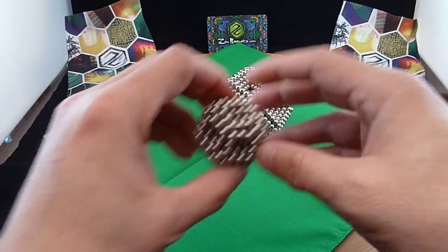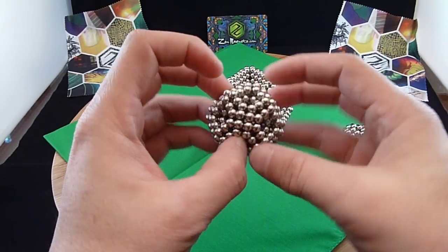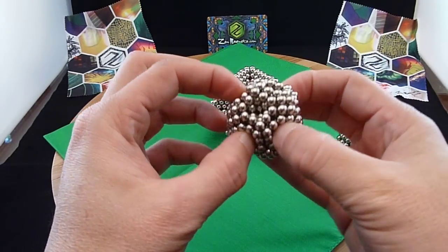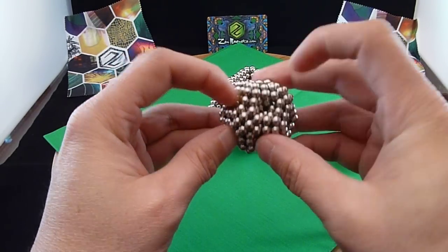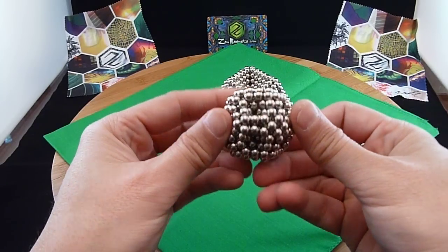So that was a two layer wrap. This is a three layer. This one you can actually kind of push in the little pockets, which I've already done for this one.